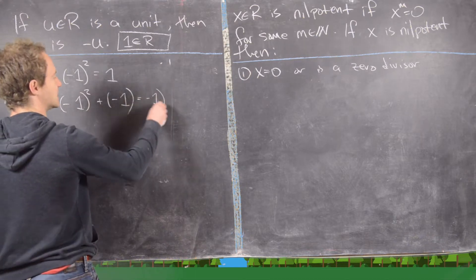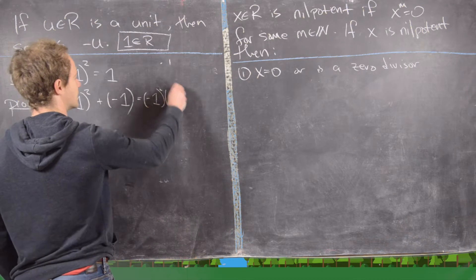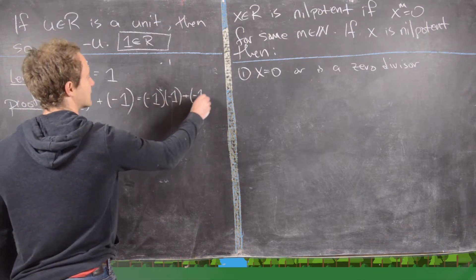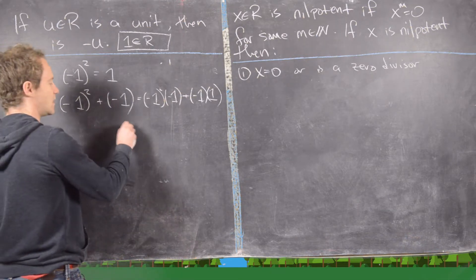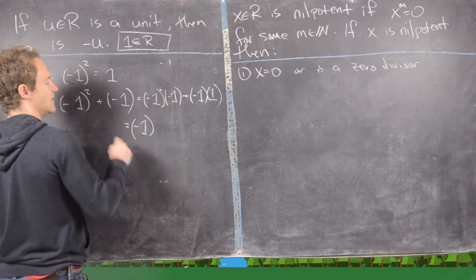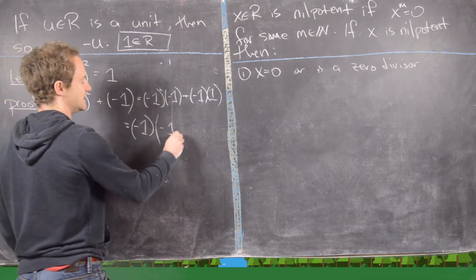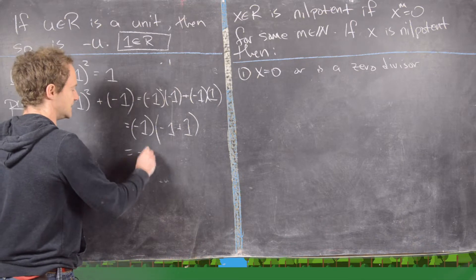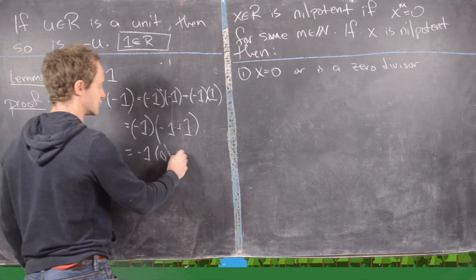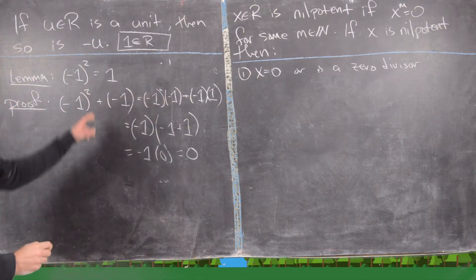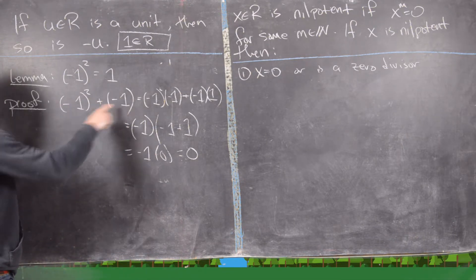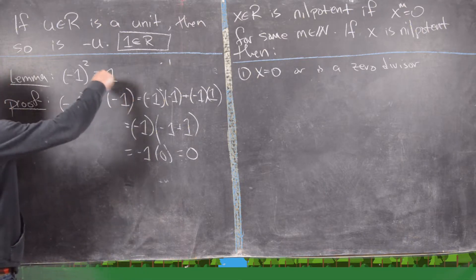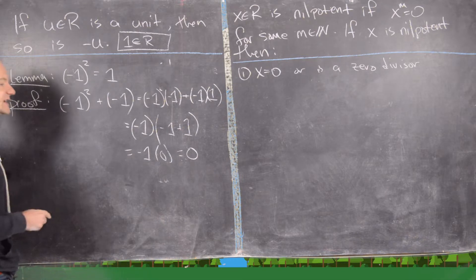We write this as negative 1 times negative 1 plus negative 1 times 1. Factoring a minus 1 out of the left leaves us with negative 1 times the quantity negative 1 plus 1, which is negative 1 times 0, equal to 0. So negative 1 squared and negative 1 are additive inverses, but negative 1 and 1 are already additive inverses, and by uniqueness, the lemma is satisfied.